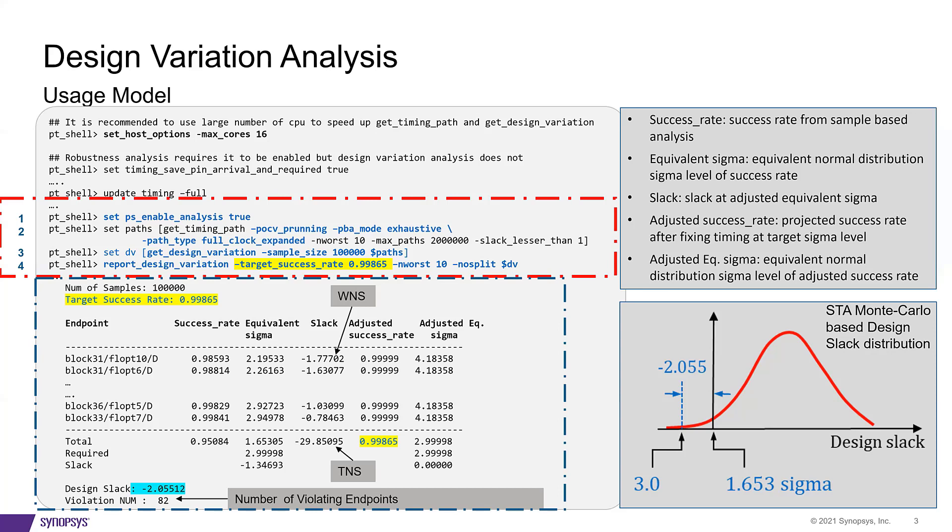From the final design slack distribution, we can then determine the design slack shown at the bottom in blue. Design slack simply means by how much we need to push the timing to get to the three sigma success rate. That is pushing the entire design slack distribution by a certain value to meet the three sigma success rate.